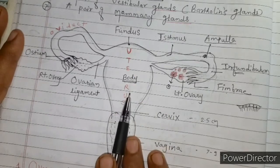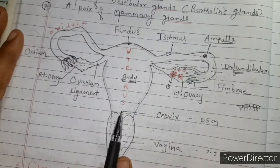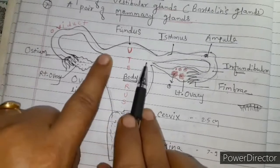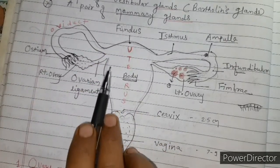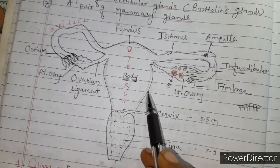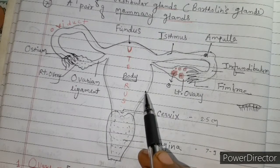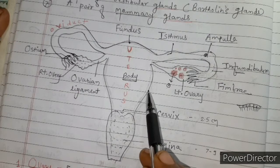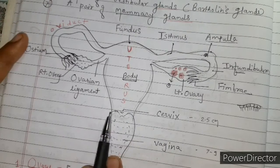The uterus is 7.5 to 8 centimetres in length. Internally, the uterus wall has three layers: the outer layer is the perimetrium, the middle layer is the myometrium, and the inner layer is the endometrium.